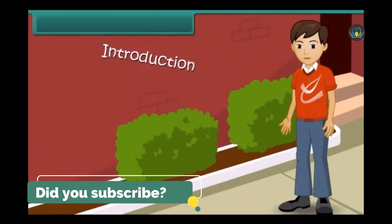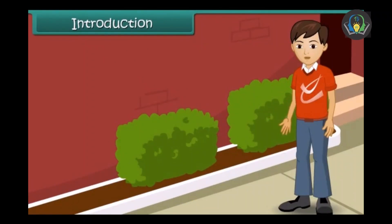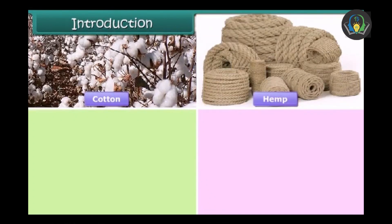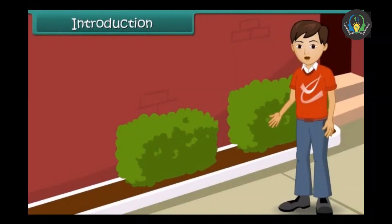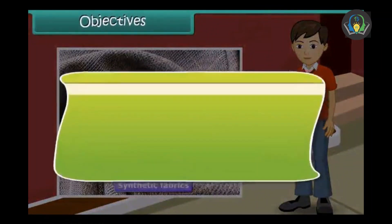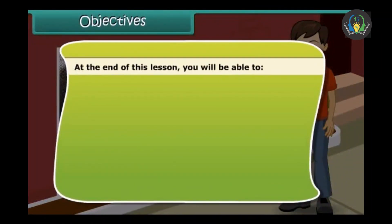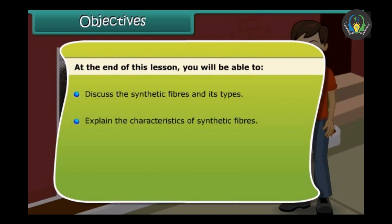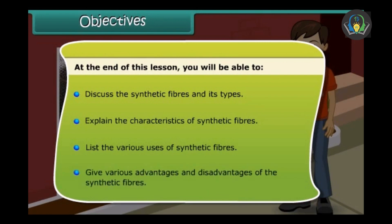Let's begin with the introduction first of all. In Form 7 you have studied about some natural fibers like cotton, hemp, wool and silk. In this particular module we shall be discussing about the synthetic fibers, which are also known as the man-made fibers. At the end of this lesson you will be able to discuss about the synthetic fiber and its types, the characteristics of synthetic fiber, various uses of synthetic fiber and also the advantages and disadvantages of synthetic fiber.